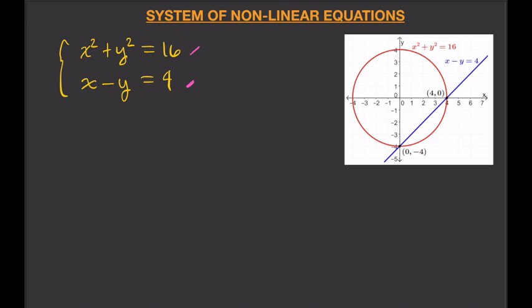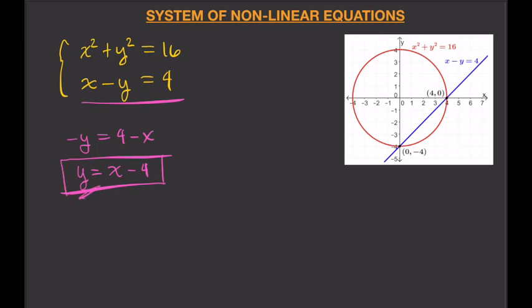We're not going to use graphing — it's difficult, especially when you deal with hyperbolas and ellipses. Let's use substitution. Just like with linear equations, we will solve one of the equations for y. I will solve the second equation because it's much easier. So that gives negative y equals 4 minus x, and multiplying both sides by negative 1 gives y equals x minus 4. I'm going to substitute this into my first equation, so I will have x squared plus (x minus 4) squared equals 16.